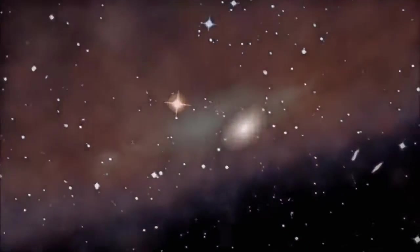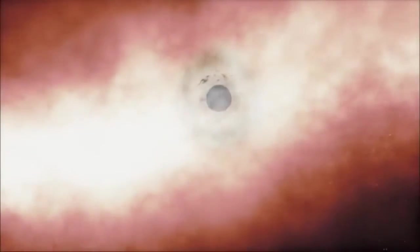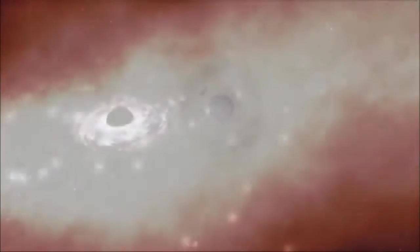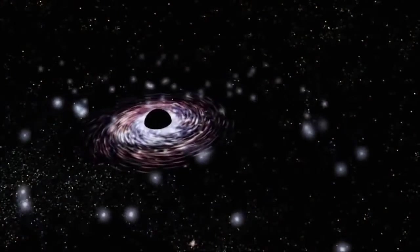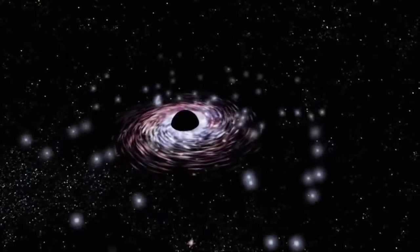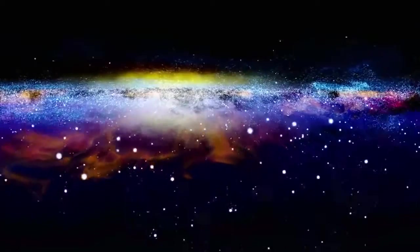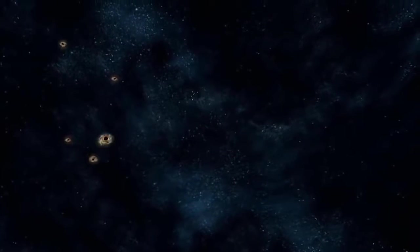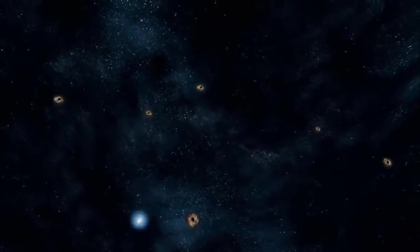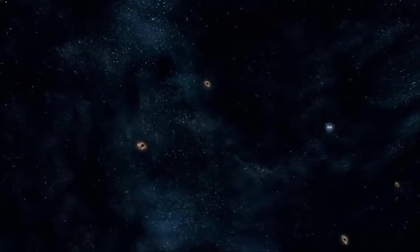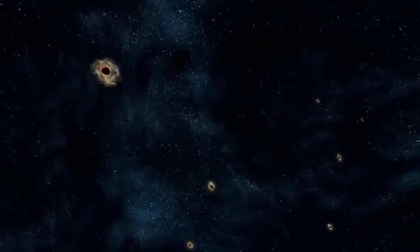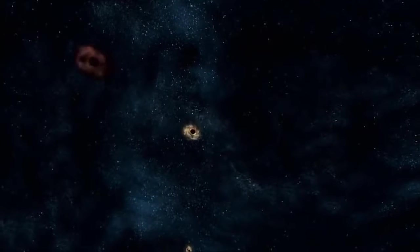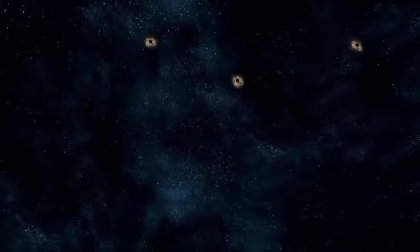Supermassive black holes have been detected in the centers of ultra luminous infrared galaxies. They're regions of space where gravity is so strong that nothing can escape it, not even light. But there's an even stranger breed of black holes that may also exist. Miniature black holes are hypothetical objects smaller than atomic nuclei. Unlike their stellar mass and supermassive black hole cousins, mini black holes have never been observed. But many scientists believe that they do exist.